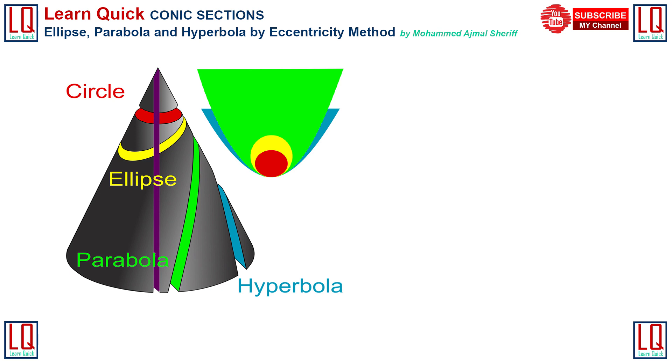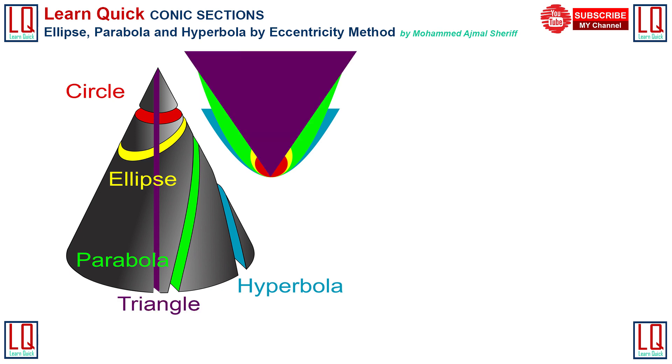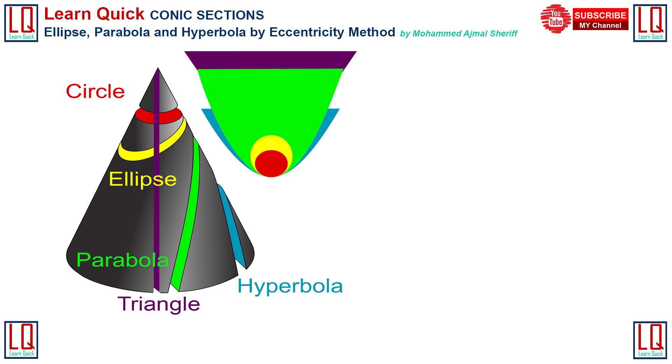When the cutting plane makes 90 degrees with base circle and passes through the center of the base circle, the shape of the cut surface is a triangle. My cute penguin dressed up with conic curves is very much eager to know the eccentricity values of the conic curves.